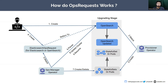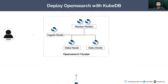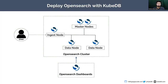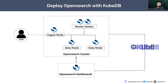Assume you have already deployed an OpenSearch database into your cluster on day one. Using KubeDB you can provision an OpenSearch database in either single-node or multiple-node cluster. Here you can see a cluster with two master nodes, one ingest node, and two data nodes. In KubeDB we have the Elasticsearch CRD that is used to deploy both OpenSearch clusters and Elasticsearch clusters.